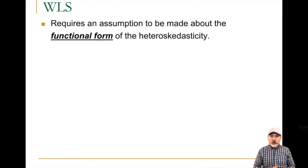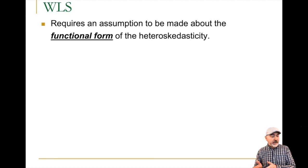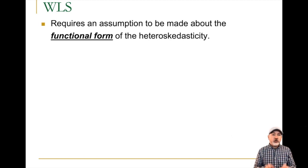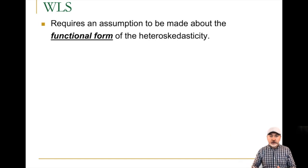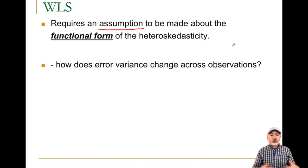Much like how we applied a first difference or generalized difference transformation to correct for autocorrelation in a time series model, in order to apply this transformation here we need to have an assumed functional form for exactly how this heteroscedasticity happens. It's not enough to just say variance goes up or down — we need to know exactly how it differs across observations. The key word is that this is an assumption; the true functional form of the error variance is unknown.